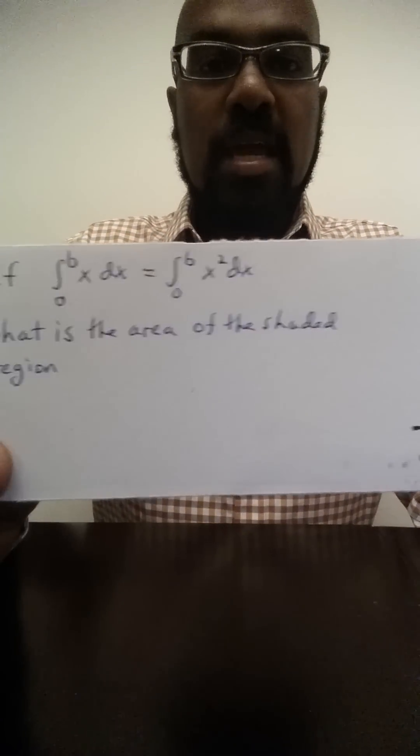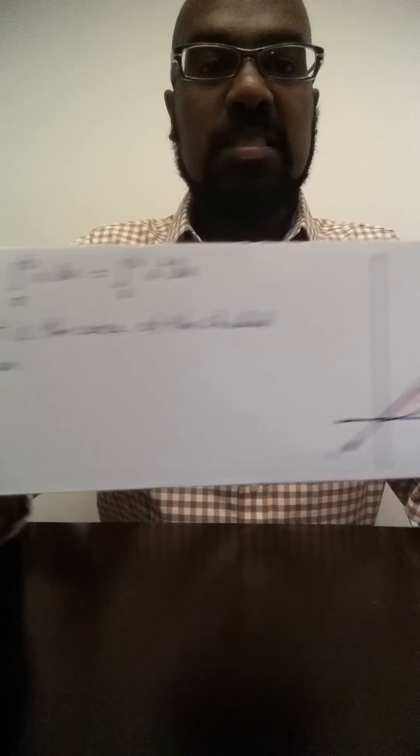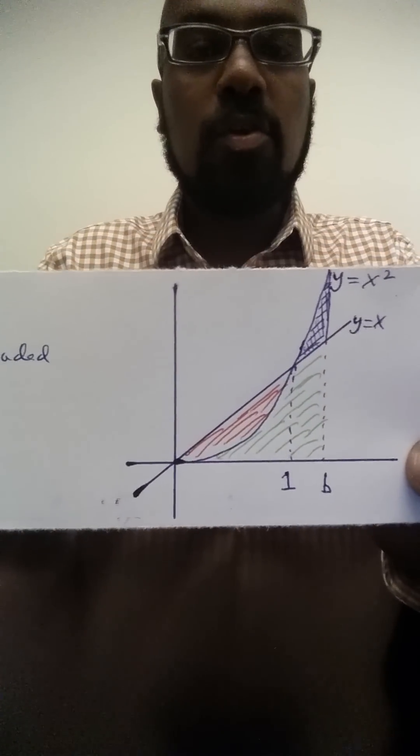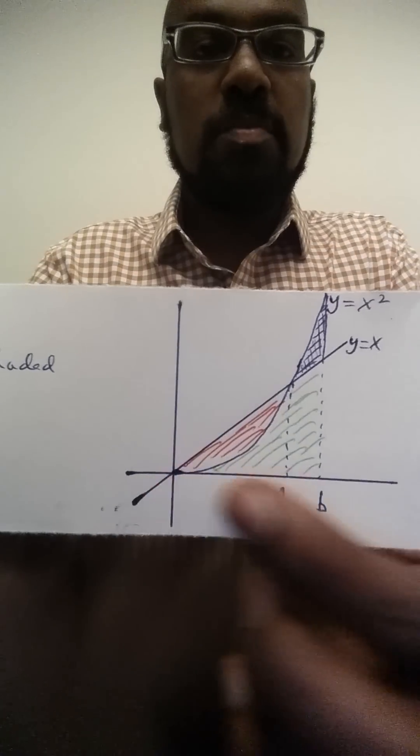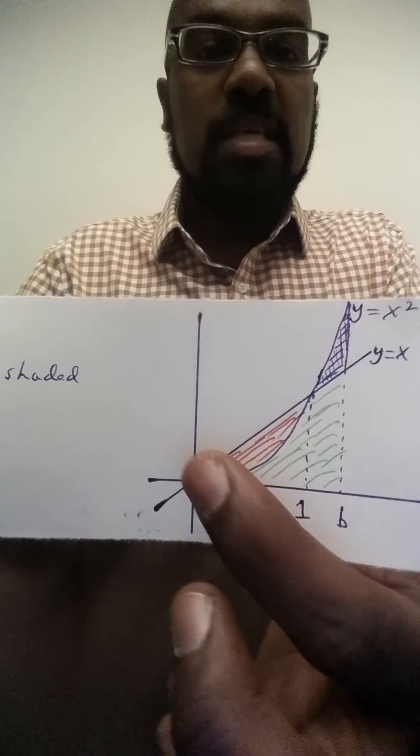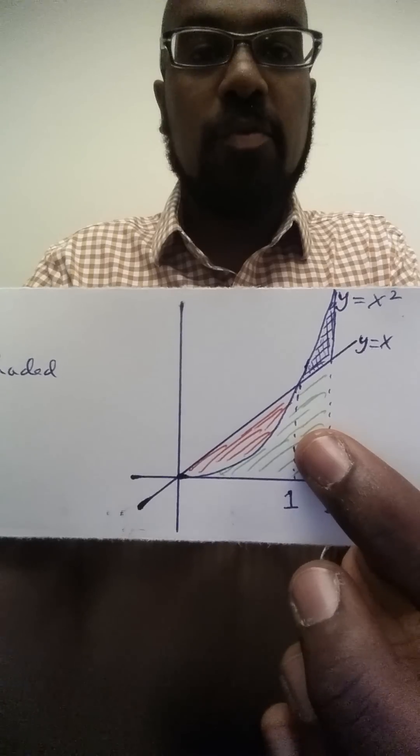The integral from 0 to b of x dx is the area under the curve y equals x from the origin to b, which is the area of the red region plus the area of the green region.